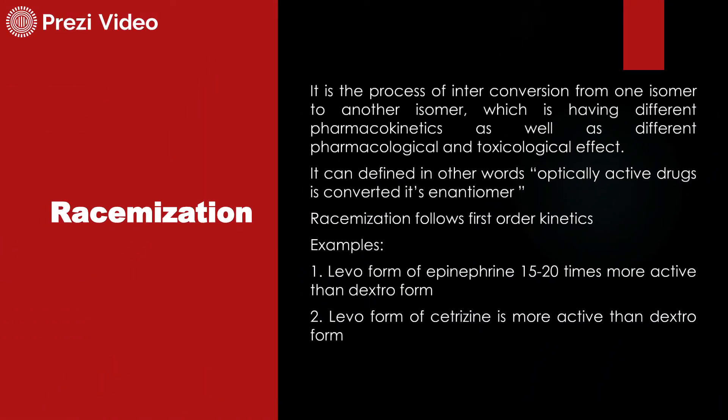So let us first figure out what is racemization. Racemization is the process of conversion of one isomer form to another isomer form. Both these forms may have different chemical and physical properties, different pharmacokinetic as well as different pharmacological properties. In other words, it is the conversion of one optically active drug into another enantiomer, and this process follows first-order kinetics.